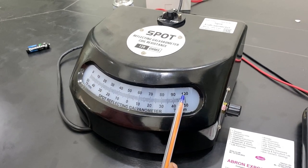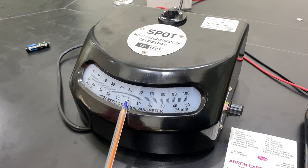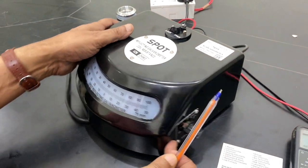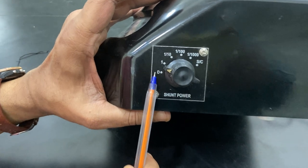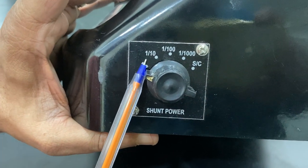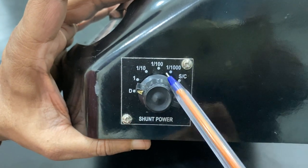Now I'll tell you the parts. These are the shunt power with the D and one value, one tenth value, one hundredth value, one thousandth value SC.